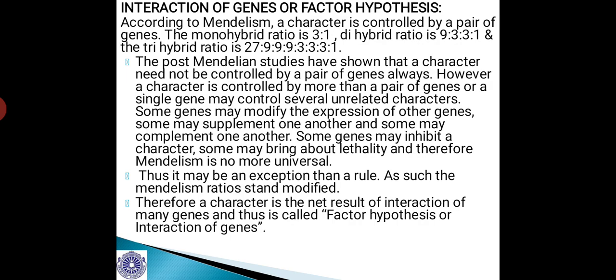That means in Mendelism a monohybrid cross gives 3:1 as phenotypic ratio and 1:2:1 as genotypic ratio, but in gene interaction we come across different types of ratios. That is why it is considered under deviations from Mendelism. Therefore, a character is the net result of interaction of many genes, and thus this is called factor hypothesis or interaction of genes.